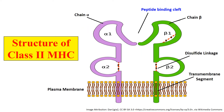In class 2 MHC, there are two full-fledged polypeptide chains — alpha and beta. The alpha chain has domains alpha 1 and alpha 2, while the beta chain has domains beta 1 and beta 2. Both chains have transmembrane regions, meaning they cross the plasma membrane and reach into the cytoplasm, and these domains also have disulfide linkages. The peptide-binding cleft in class 2 MHC is formed by the interaction between the alpha 1 and beta 1 domains.